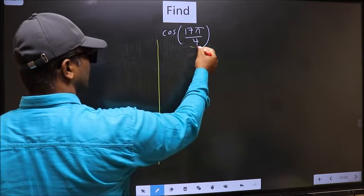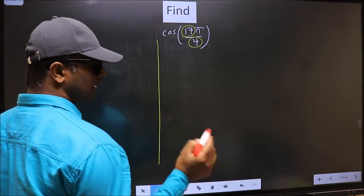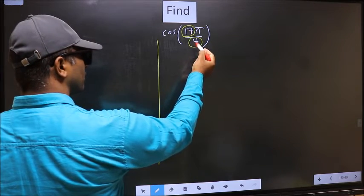In the denominator, we have 4. In the numerator, 17. Now you should check, 17 is close to which multiple of 4.